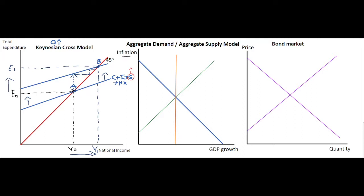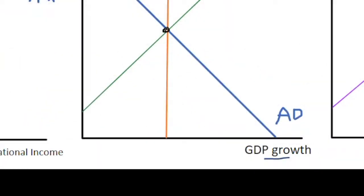Now how do we model that in a real economy in terms of inflation and GDP growth? Moving to the aggregate demand and aggregate supply model: aggregate demand is our downward-sloping line showing the negative relationship between inflation and GDP. Our upward-sloping line is short-run aggregate supply showing a positive relationship. We also have a long-run aggregate supply curve which is independent of inflation and hence vertical. Where they intersect we have an equilibrium point, with this economy at its potential output level in both the short run and the long run, with inflation at inflation-one and GDP growth at around five percent.